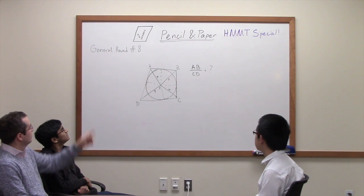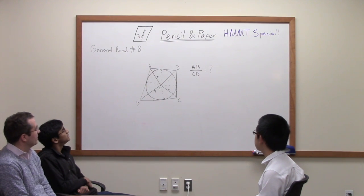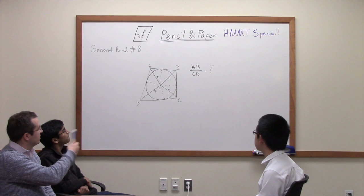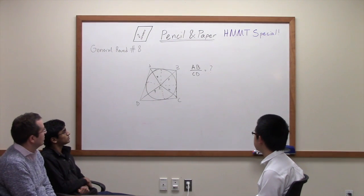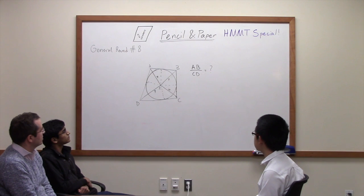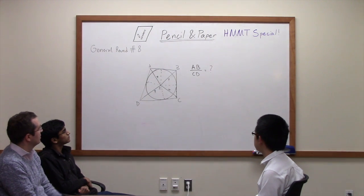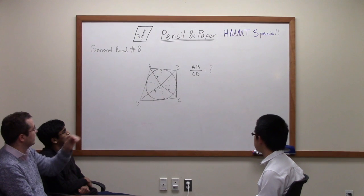In this problem, which was problem number 8, the geometry problem, we have a quadrilateral and there is a circle. We know the distances from the center of the circle to the vertices are 5, 7, 4, and 9.